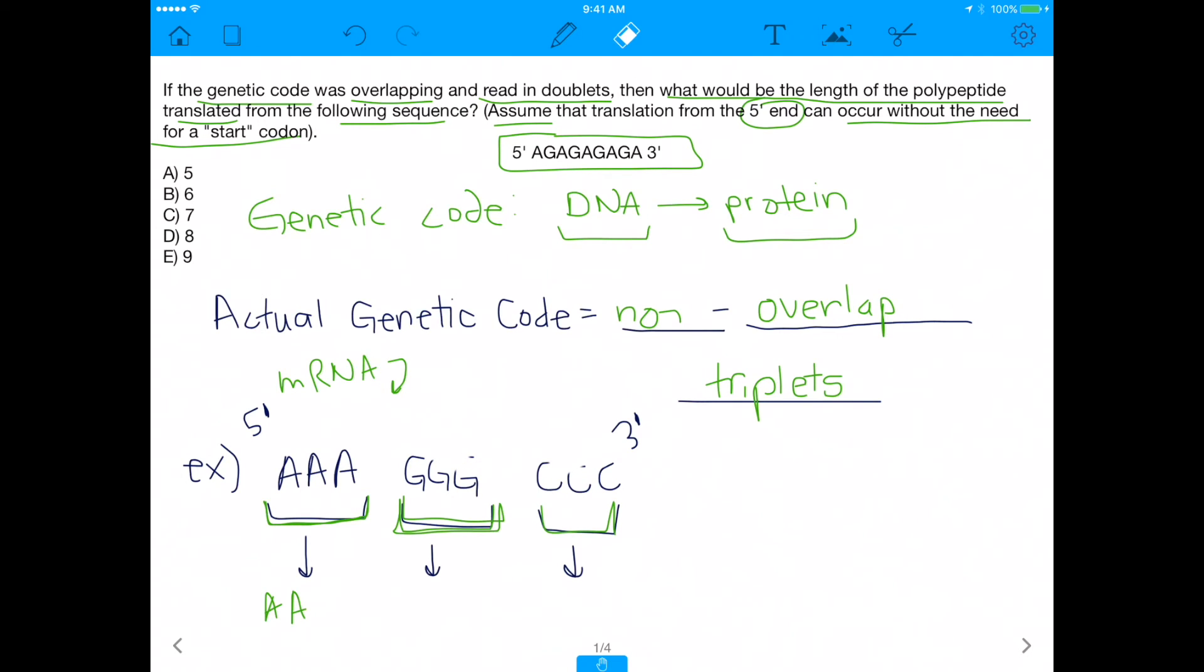So let me show you what I mean by that. You cannot have something like this, right? This will be overlap, and that doesn't happen. So basically what I mean by that is the actual genetic code is non-overlapping triplets.